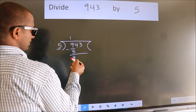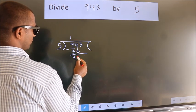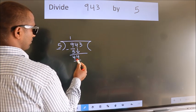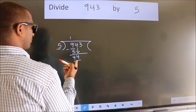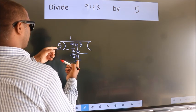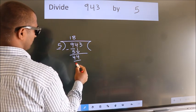After this, bring down the beside number. So, 4 down. So, 44. A number close to 44 in 5 table is 5 8s 40.